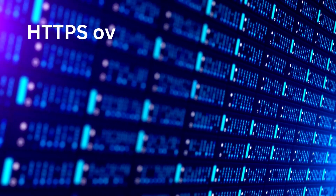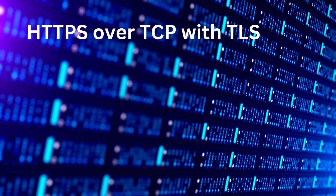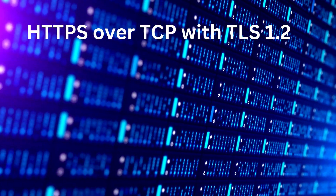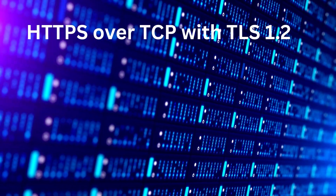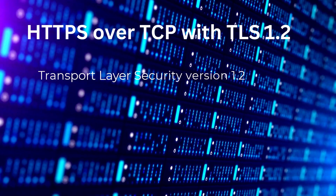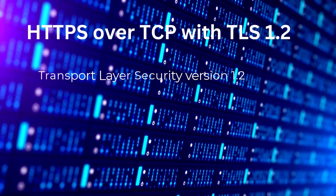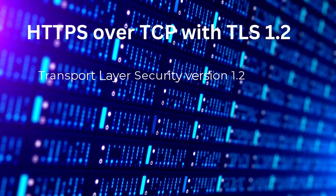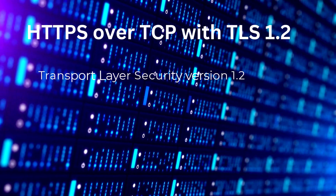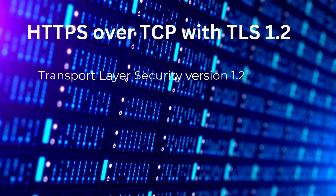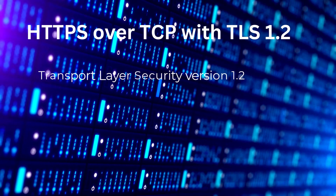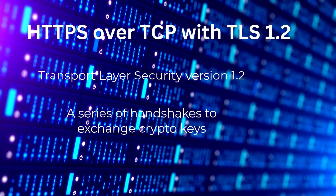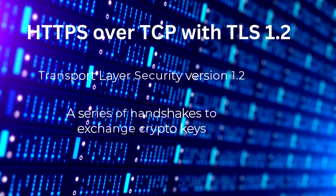First off is HTTPS over TCP, or Transmission Control Protocol, using TLS 1.2, which stands for Transport Layer Security version 1.2. This method ensures data integrity and confidentiality by establishing an encrypted communication channel between the client and the server. The encryption process involves a series of handshakes to exchange cryptographic keys before transmitting data.